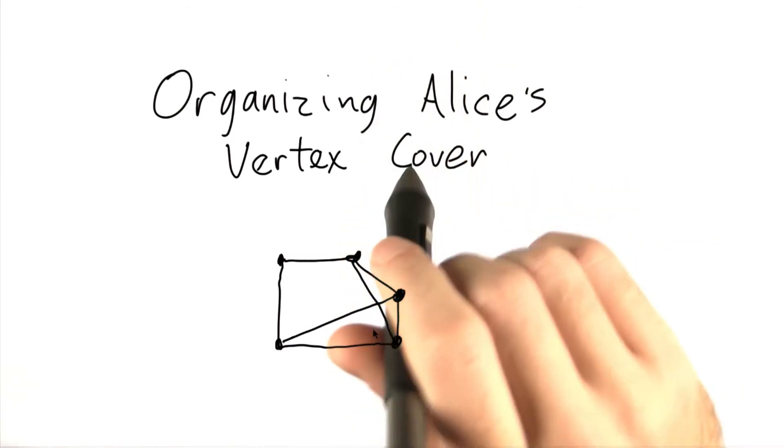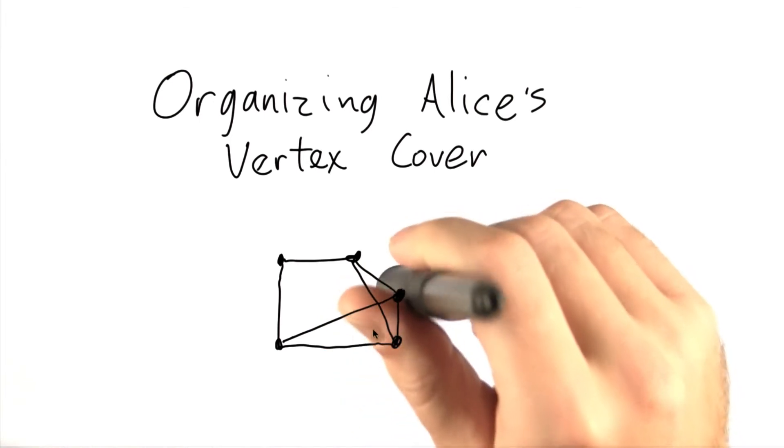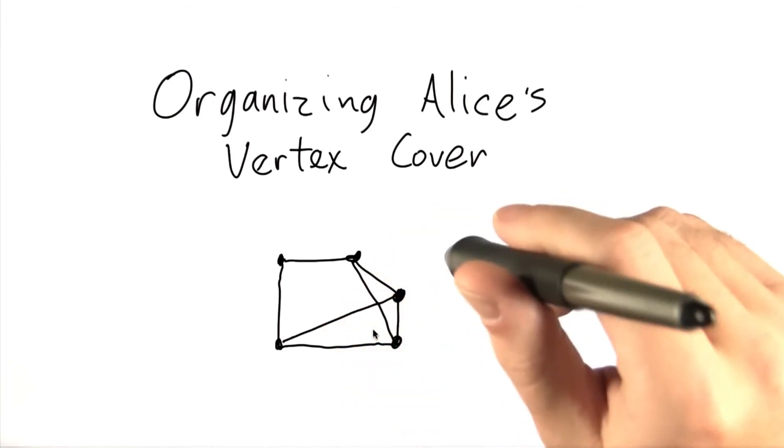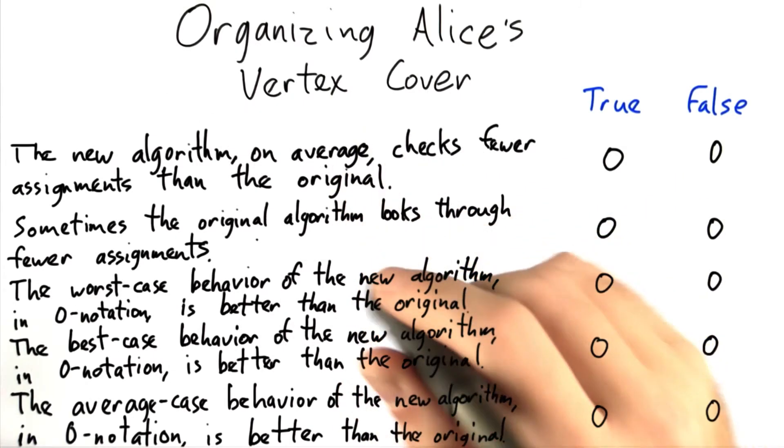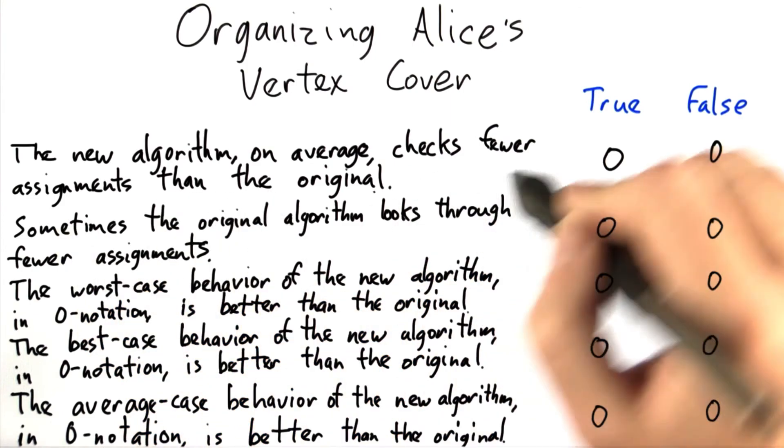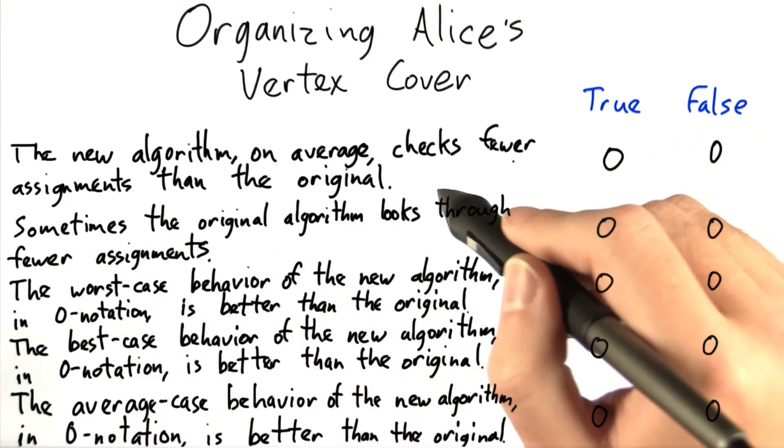Now, my question then is, does this change how the underlying algorithm performs? So let's go down the questions. First, does the new algorithm on average check fewer assignments than the original?